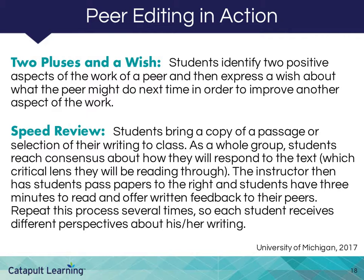A speed review can be a useful tool when many students are struggling with a particular aspect of the assignment or desire feedback at an early stage. It works well with any part of the paper that can be read fairly quickly and for which correct or desirable components can be identified. A good speed peer review could be performed, for instance, on thesis statements. Students should bring printed versions of their thesis statements to class. Chairs should be arranged in a circle, and the class should come to a consensus about how exactly they should respond — for instance, if the thesis is specific enough or if it responds to the prompt. The instructor then has students pass papers to the right and gives students three minutes to read and offer written feedback. After three minutes, students pass papers to the right again. In this way, in less than 10 minutes, students can get several different perspectives on the effectiveness of their theses.